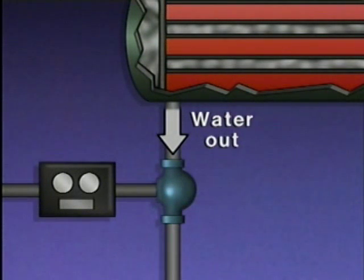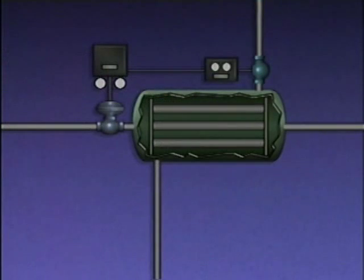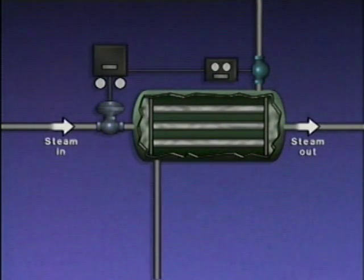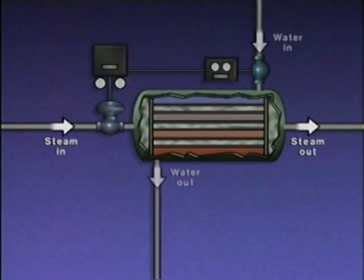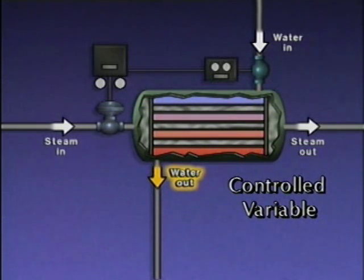A feedforward control system attempts to correct for a process disturbance before the controlled variable in the process deviates from set point. To get a better understanding of how a feedforward control system works, let's look at an illustration of a heat exchange process that's controlled by a feedforward system. In this system, steam flows through tubes inside a heater and heats water that flows around the tubes. The controlled variable in the system is the water temperature at the outlet of the heater.